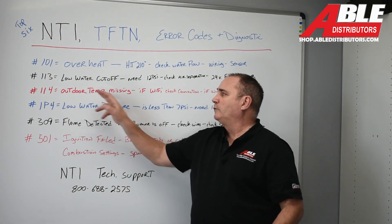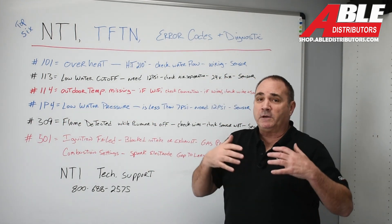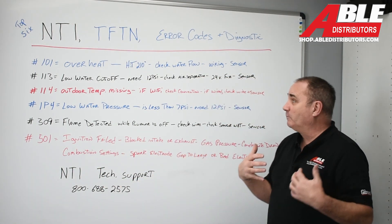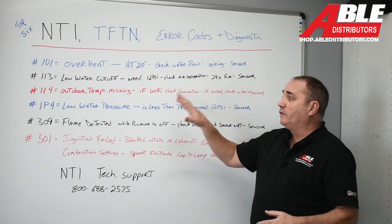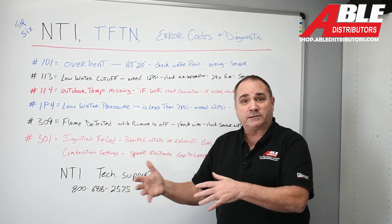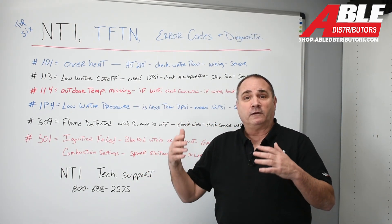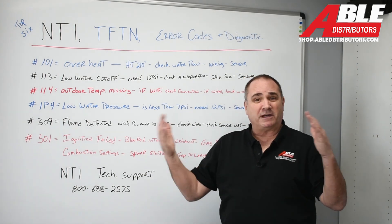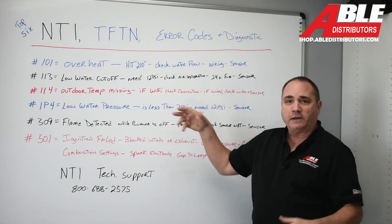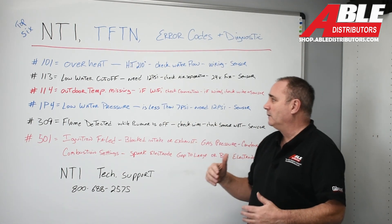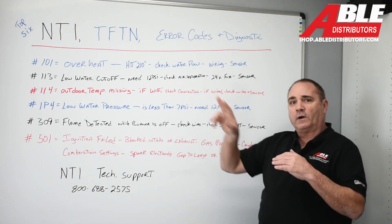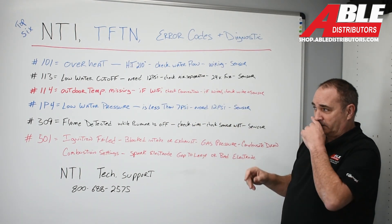Code 114: outdoor temperature missing. This means you had an outdoor temperature sensor wired there and for some reason the board's not picking it up. With this boiler you can do that via Wi-Fi to take advantage of outdoor resets — on a day like today in February when it's 50 degrees out, you might not have to fire that boiler all the way. If you connected it via Wi-Fi, make sure you didn't lose that signal. If you connected it wired, check the wire going outside and check that sensor outside.